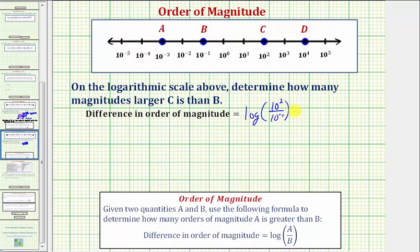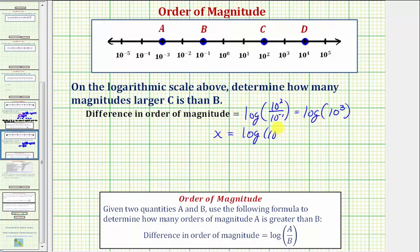Let's go ahead and simplify this quotient. We have the common log of ten raised to the power of two minus negative one, which becomes two plus one, which is three. So this tells us that c is ten to the third, or one thousand times larger than the value of b. The common log of ten to the third gives us the difference in the order of magnitudes. So if we let x be equal to the difference in the order of magnitudes, we'd have x equals the common log of ten to the third. Because we have common log, this is log base ten.